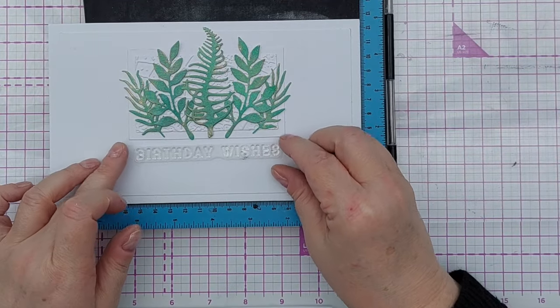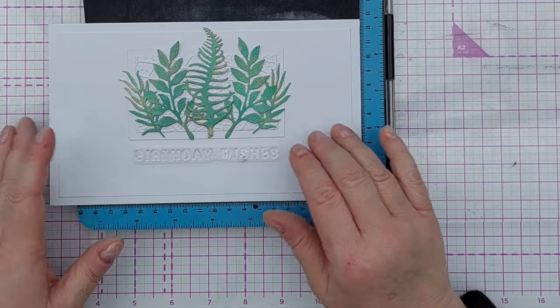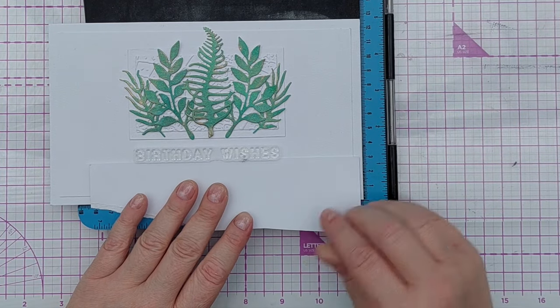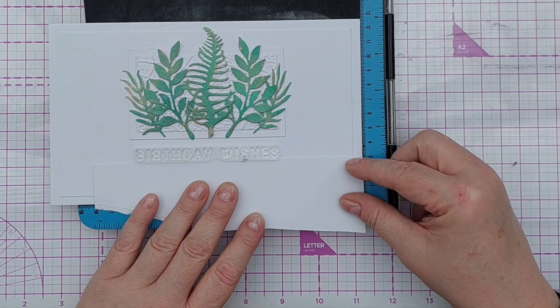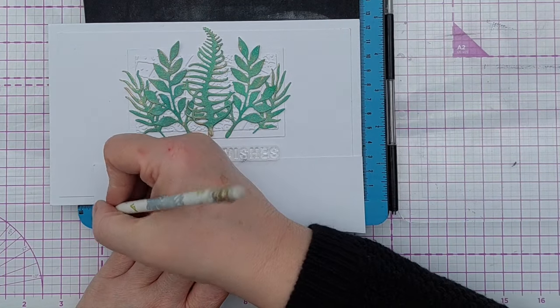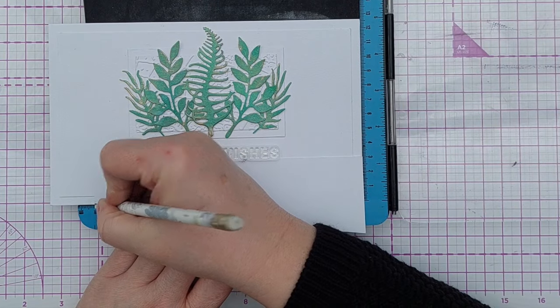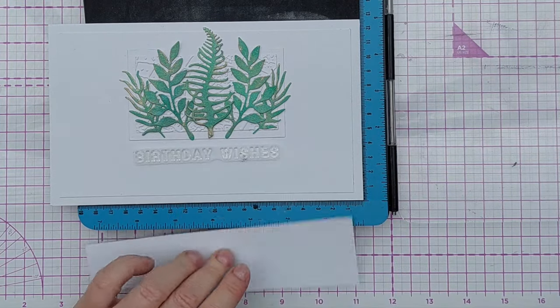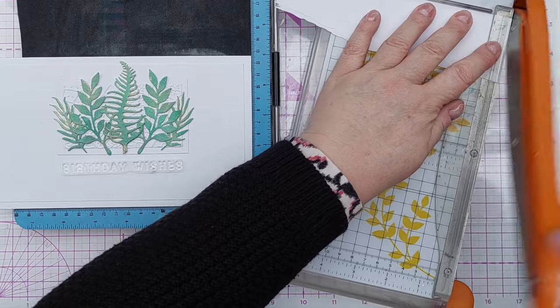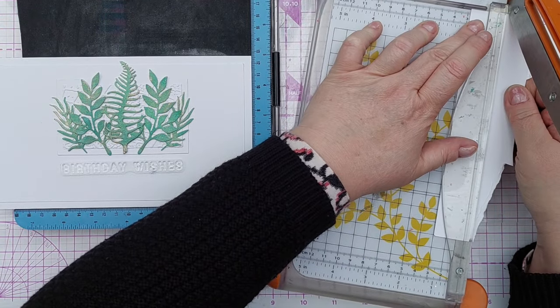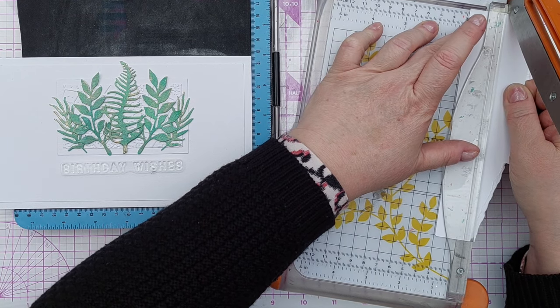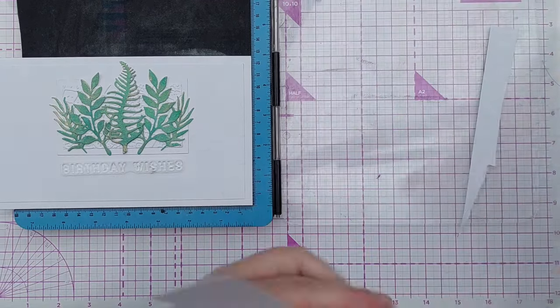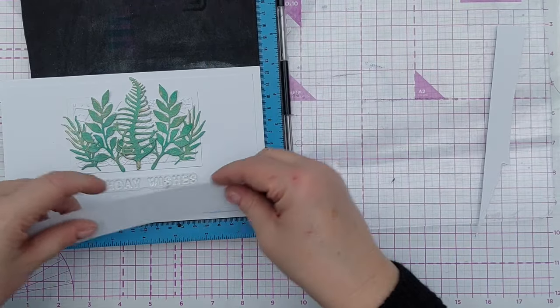This is my sentiment, birthday wishes, and I want to stamp it in a straight line underneath there. So I want to create a jig, it's a different type of jig this time, just to help me line up my birthday wishes. I'm going to put it where I want it, push that up against it, mark a line here where I'm going to cut, make sure I get a perpendicular line.